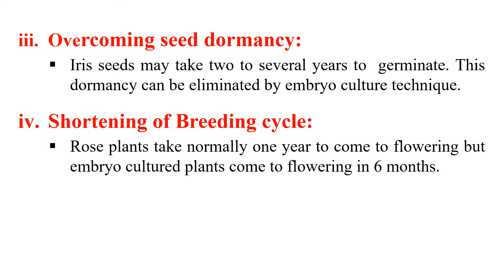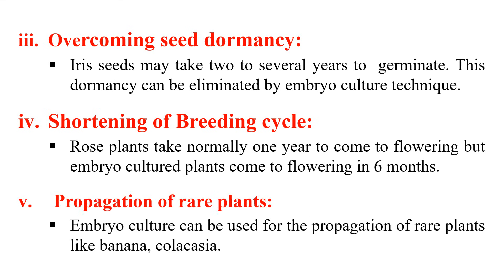The next application is shortening of the breeding cycle. By breaking seed dormancy, we can shorten the breeding cycle of a plant — for example, rose plants that normally take one year to flower can be made to flower within six months using embryo culture. Finally, embryo culture can be used for propagation of rare plants like banana and Colesia. That covers the applications of embryo culture. This is all about embryo culture — see you in the next video.